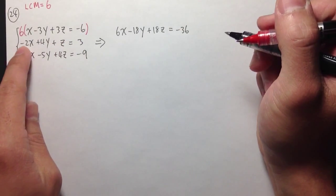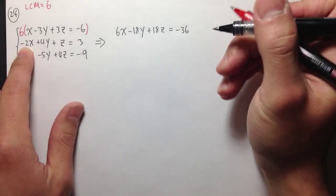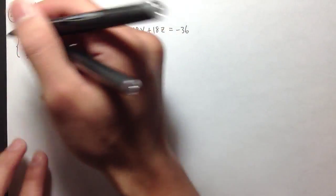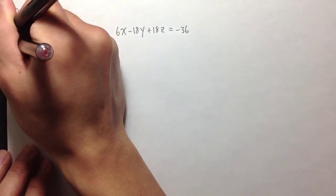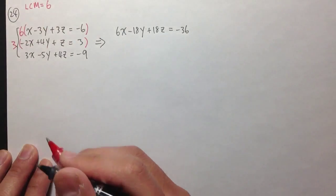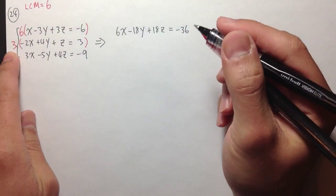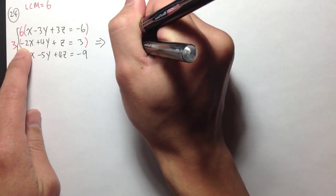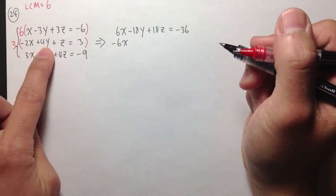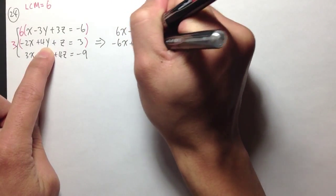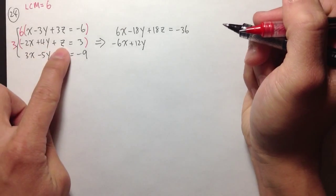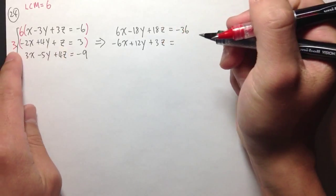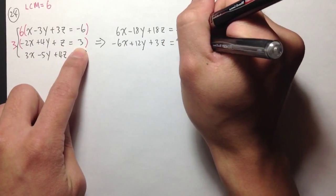For the next equation, I have negative 2x already. So I just need to multiply by 3 to make it a 6. Multiplying the second equation by 3: 3 times negative 2x gives negative 6x, 3 times 4y gives plus 12y, 3 times z gives plus 3z, and 3 times 3 gives 9.